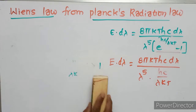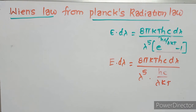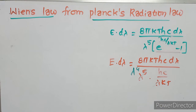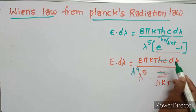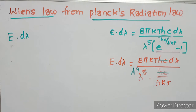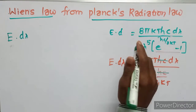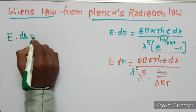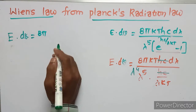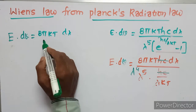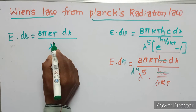After further simplification, lambda terms cancel — lambda to the power of 4 remains. The hc terms also cancel, giving E·d_nu equals 8·pi·kT·d_lambda divided by lambda to the power of 4.